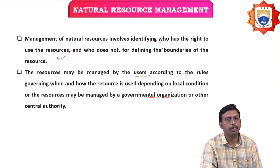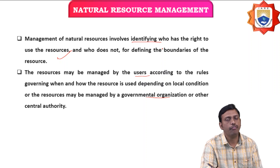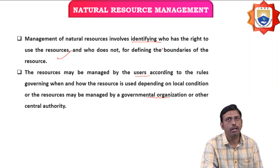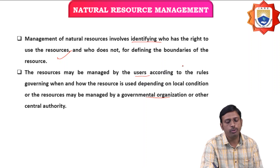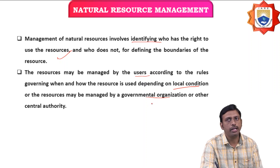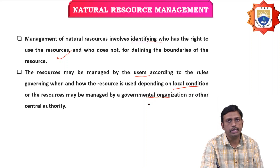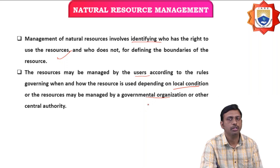Resource management involves identifying who has the right to use a resource and defining boundaries. Resources may be managed by users according to rules set by the government, depending on local conditions, or managed by governmental organizations or a central authority. For example, land is used for irrigation and agriculture by farmers under such rules.